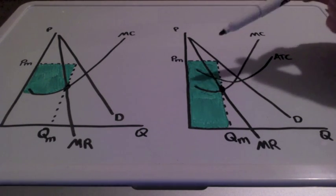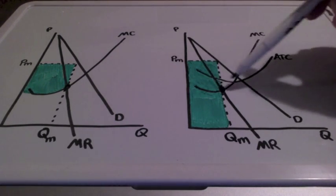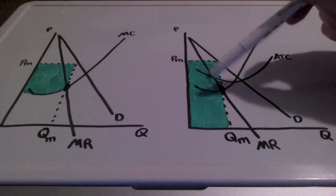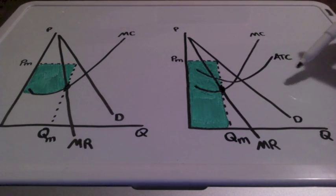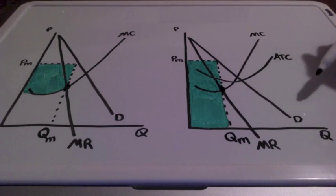But we must take into account all the firm's costs, not only marginal cost, but average total cost. We also have average variable cost below average total cost, and average fixed cost as well.